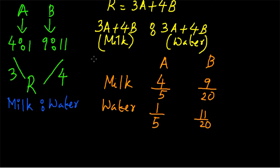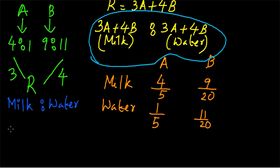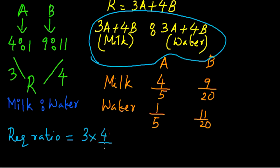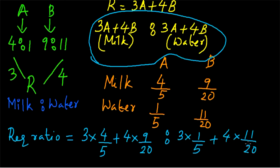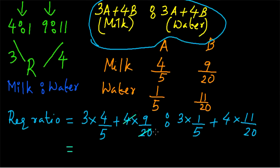Now it's time to find our required ratio. The required ratio will be given by (3A + 4B) of milk to (3A + 4B) of water. This equals 3 × (4/5) — since milk in A is 4/5 — plus 4 × (9/20) — since milk in B is 9/20 — is to 3 × (1/5) — since water in A is 1/5 — plus 4 × (11/20) — since water in B is 11/20.